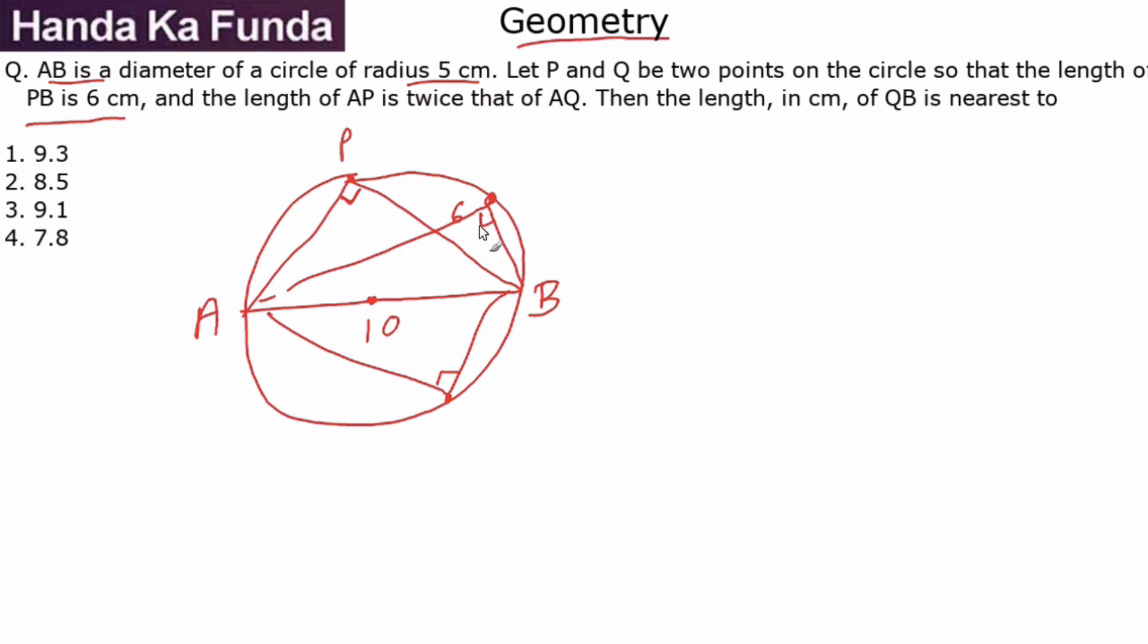Now if we have that information, we now know that this is a right angle triangle. This is 10, this is 6. So what will be the length of AP? Pythagoras: hypotenuse square minus side square, 100 minus 36 is root of 64 which is 8. That means I've got the value of AP as 8.